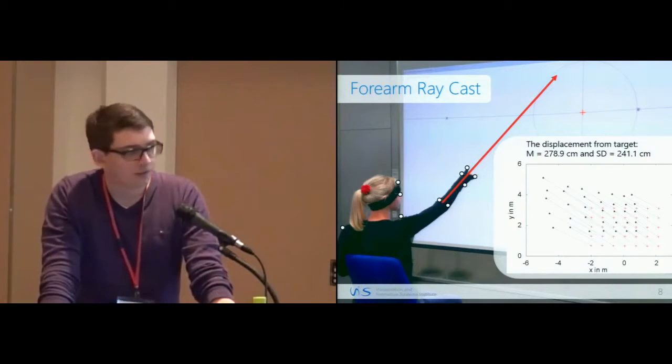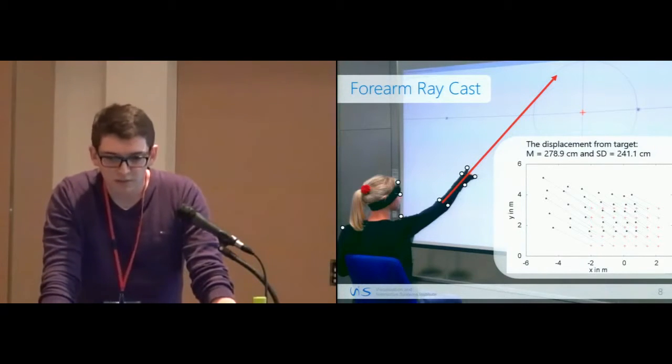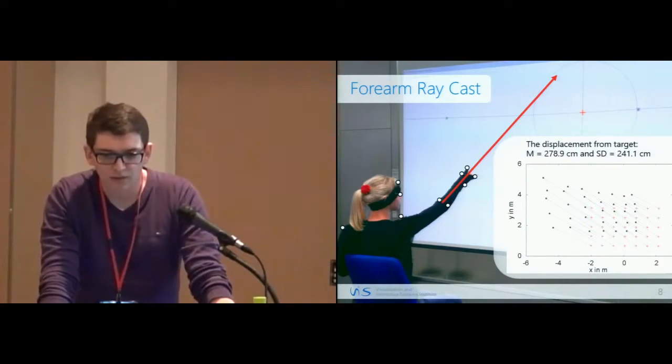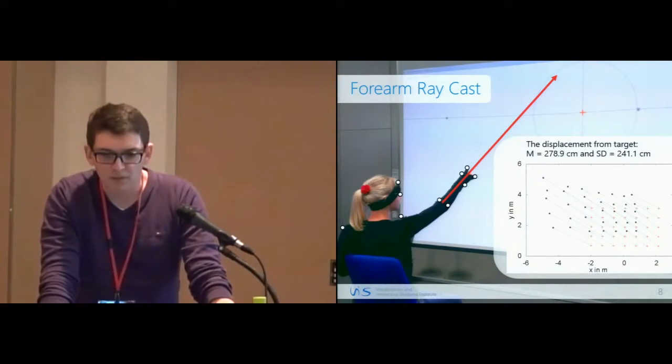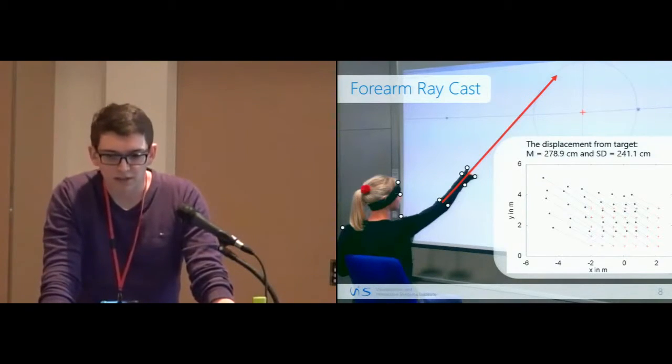In the lower right, you can see the graph showing the 35 targets represented by the red cross and the corresponding intersection points represented by the black dots. You can see an overall systematic displacement between the targets and the intersection points.